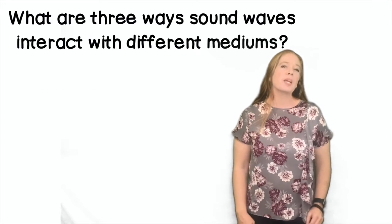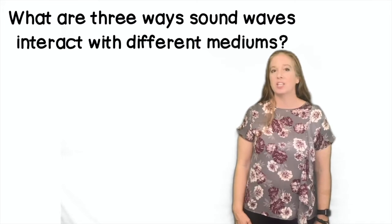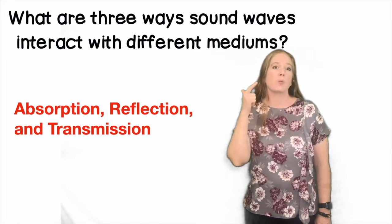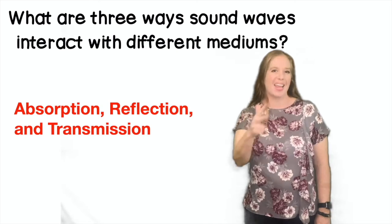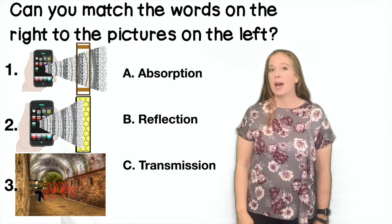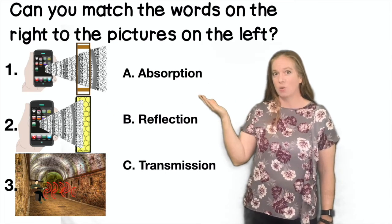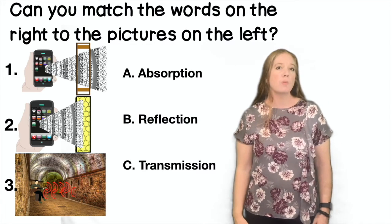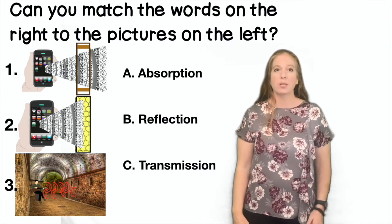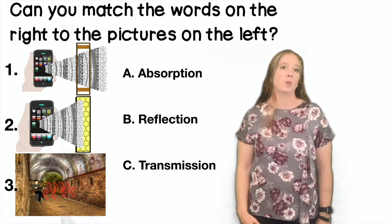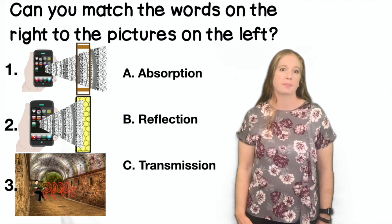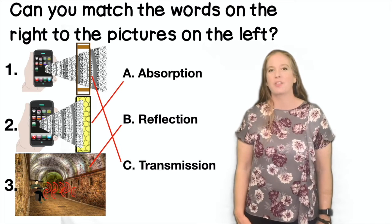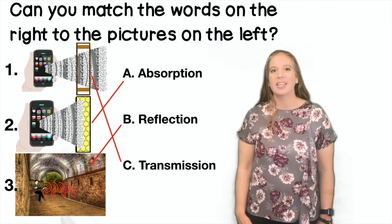What are three ways that sound waves can interact with different mediums? Absorption, reflection, and transmission. Can you match the words on the right with the pictures on the left? Which one would be absorption, which one would be reflection, and which one would be transmission? Number one is transmission, two is absorption, and three is reflection.